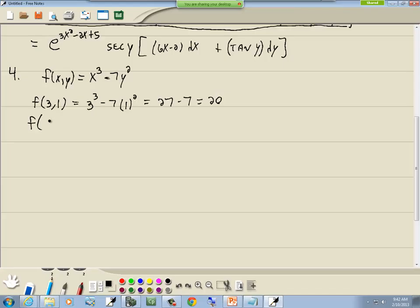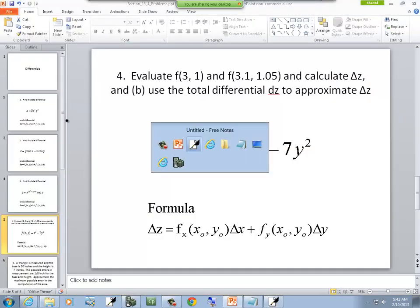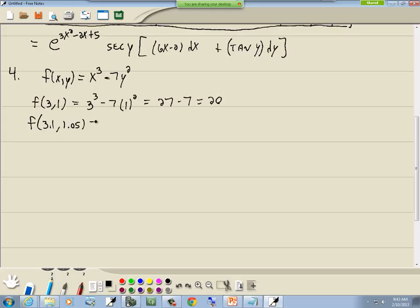And then f of 3.1, 1.05. Plug 3.1 in for the x, 1.05 in for the y. So we've got 3.1 to the third minus 7 times 1.05 squared. I'm going to plug that in my calculator. So that gives us 22.0735.